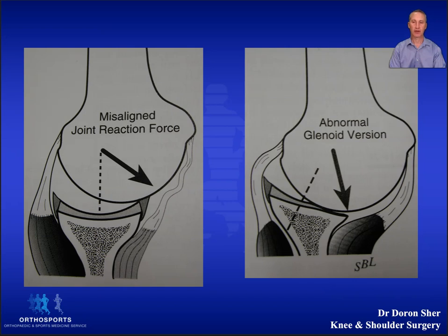If you don't control your scapula, this makes things worse. There are also static factors that can cause this, with a tilt of the glenoid being one of the most common. This allows the shoulder to sublux as we see in this diagram.